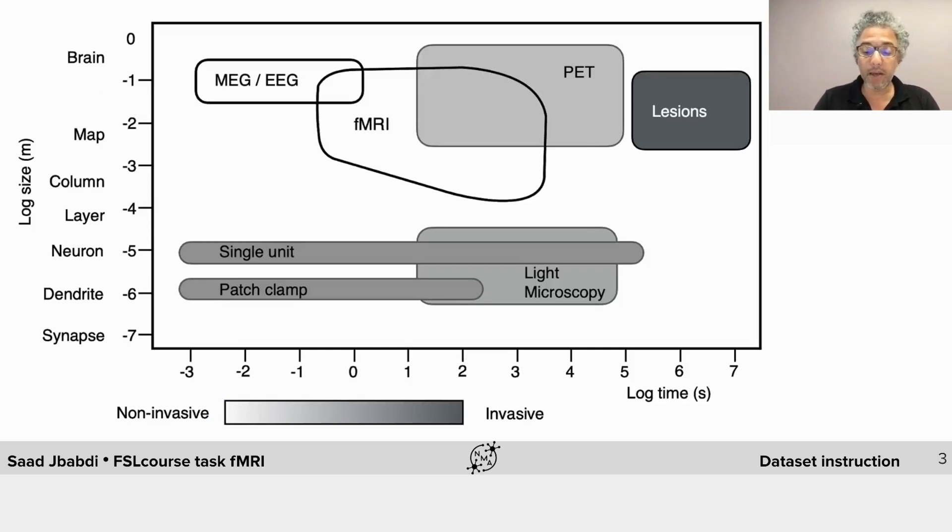In case you're not familiar with fMRI, this diagram shows you how it compares with other types of data in terms of spatial and temporal resolution. fMRI makes measurements at the millimeter scale and at a sampling rate of about a brain per second.